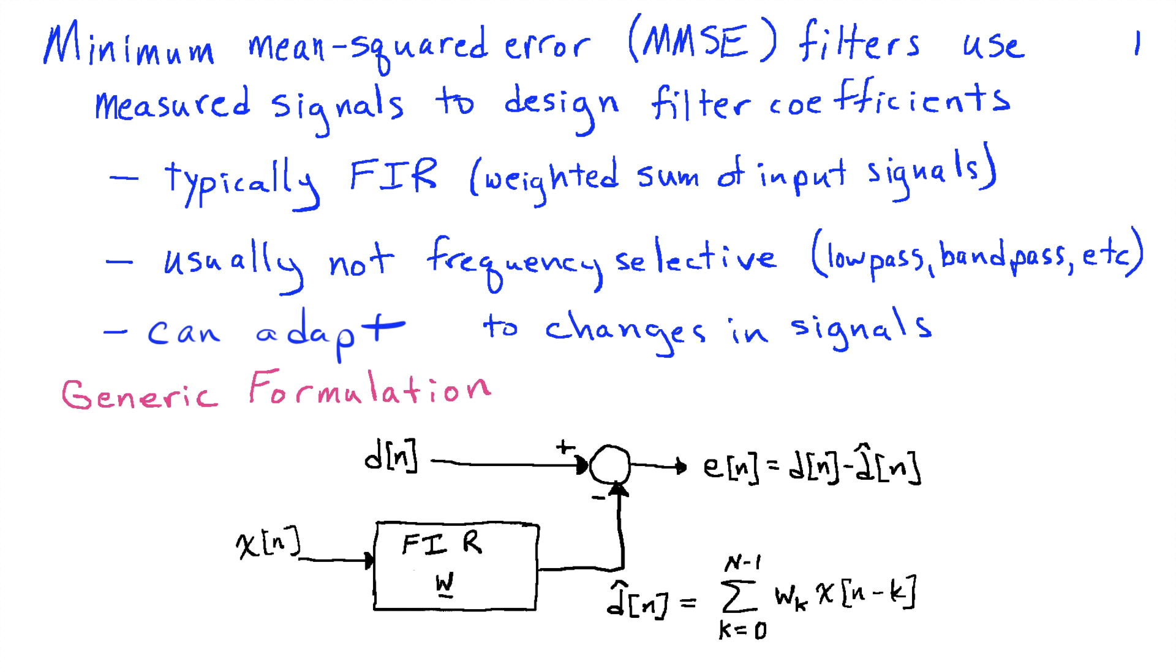So here's the generic way that this problem is set up. We have two signals that are critical to the application of this filter. One, D of n, which will be in this upper branch here.